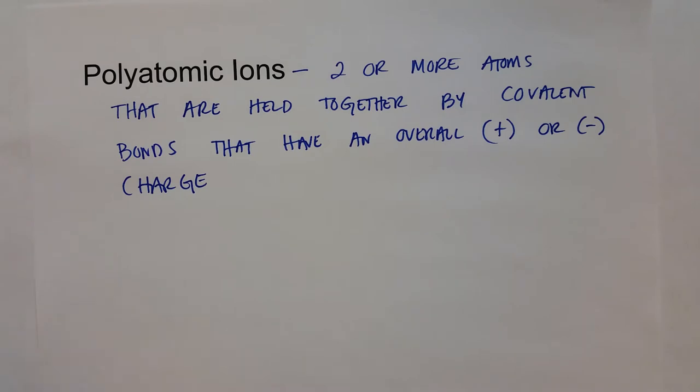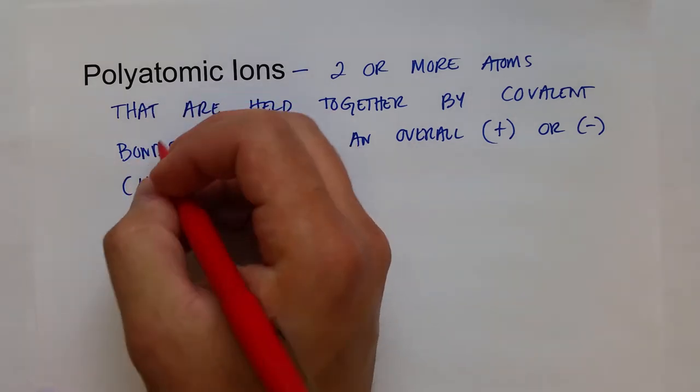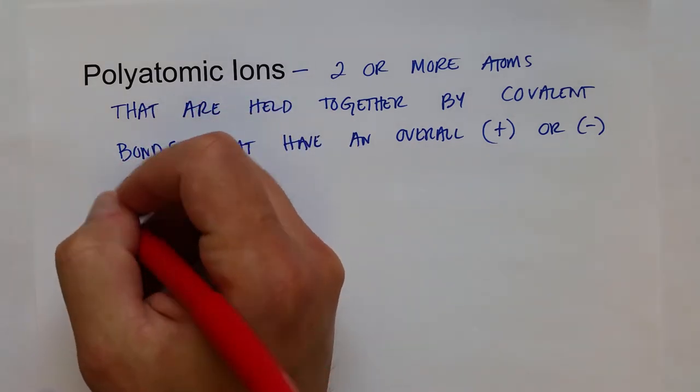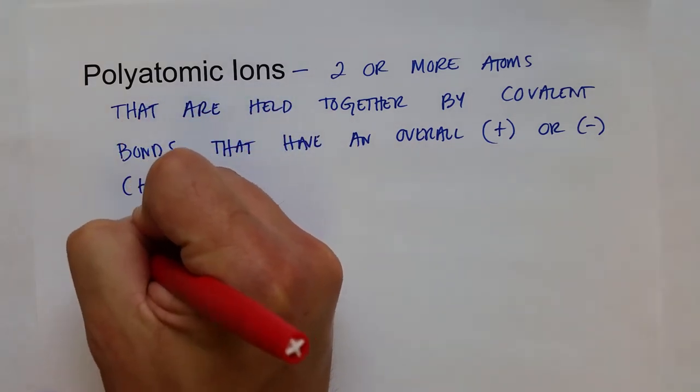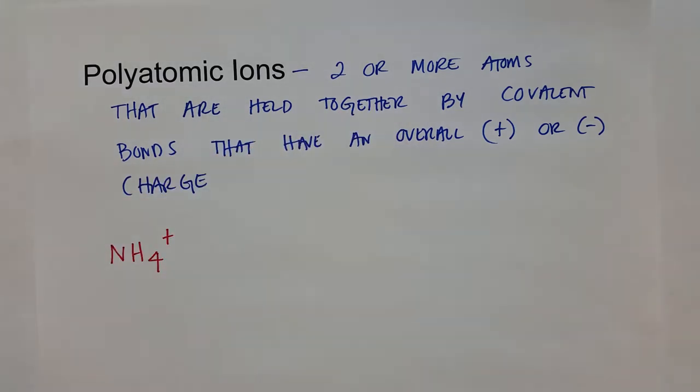So there are a lot of different types of polyatomic ions. We'll go over a few of the most common ones that you might run into. One that has a positive charge is the ammonium ion, so that has one nitrogen atom covalently bonded to four hydrogen atoms, and overall it has a positive charge. That means it has one more proton than it does electrons in this whole ion.